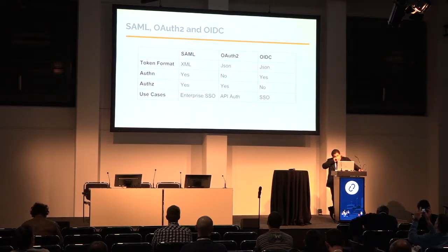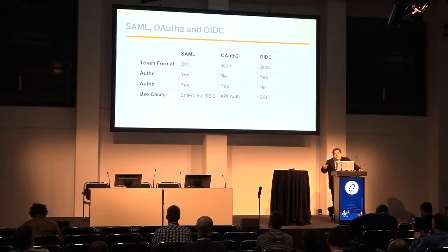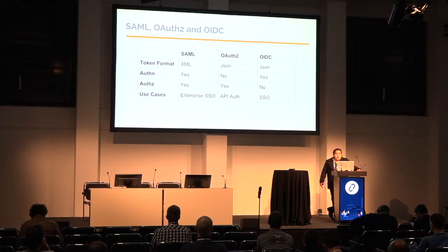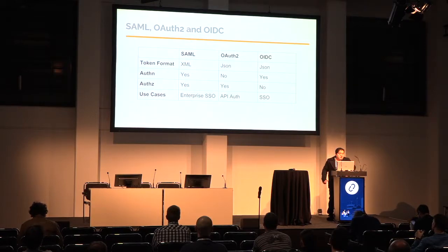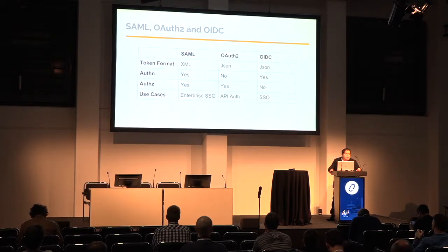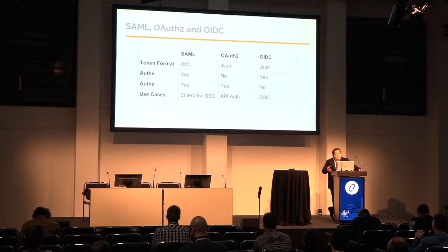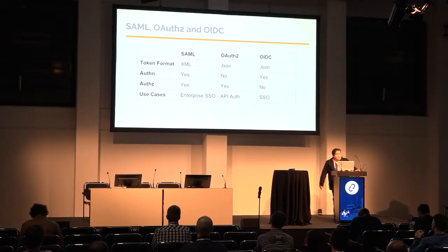OAuth2 is similar but won't actually do the authentication — it will tell you that this user can be authorized for certain things, but won't say this user claims to be this user and is correct. OIDC only takes care of authentication but won't tell you that you have access to a specific resource. Think of OAuth2 and OIDC as complementing each other. For use cases: SAML is the overall enterprise use case, OAuth2 is more focused on API servers using tokens, and OIDC is more for web interfaces that already have some role management on the back end.